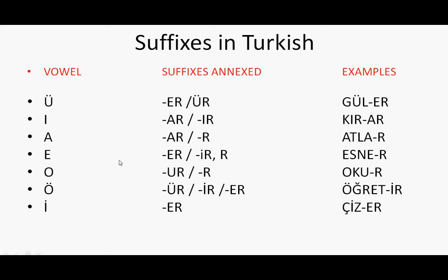Next, the vowel E. If the verb finishes with E, then use ER, IR, or RE as the suffix. For example, ESNE means 'yawn.' He yawns — ESNE + R = ESNER. We put RE here because the verb finishes with the E vowel. That's why we only add RE.